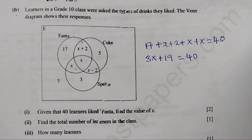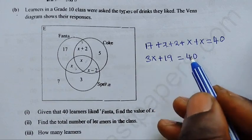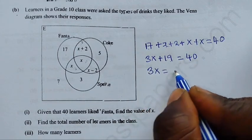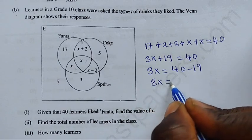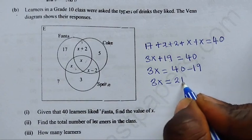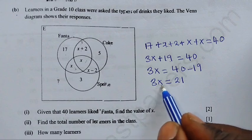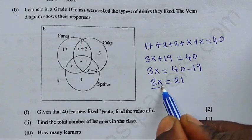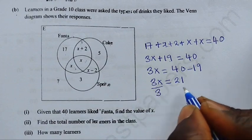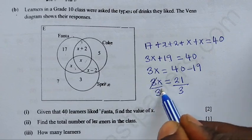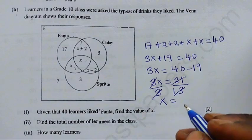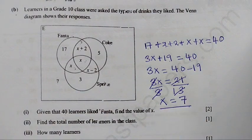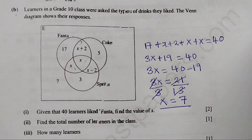From 3X + 19 = 40, we move 19 across: 3X = 40 − 19 = 21. Dividing both sides by 3, we get X = 7. So the value of X is 7.